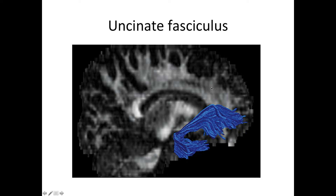Here you see an actual picture — a diffusion-weighted image, or DWI. Someone performed a tractography analysis on it, and this is what the uncinate fasciculus looks like in this person's brain or in an average brain.